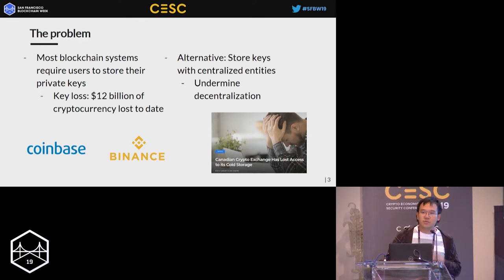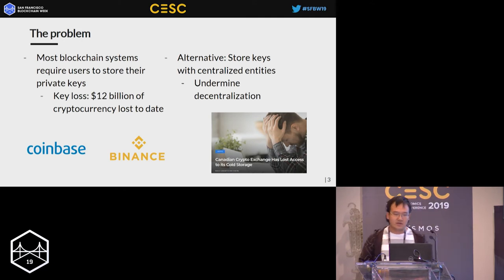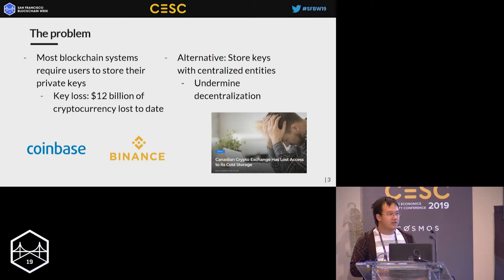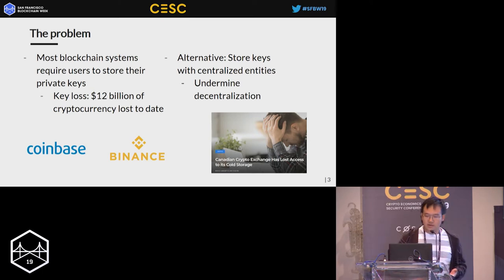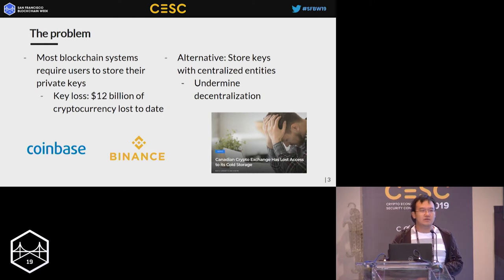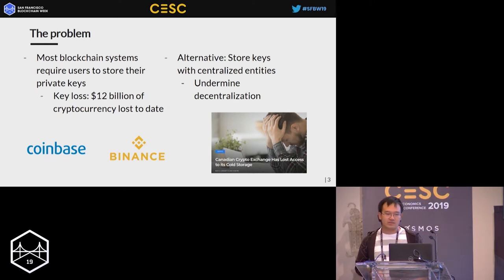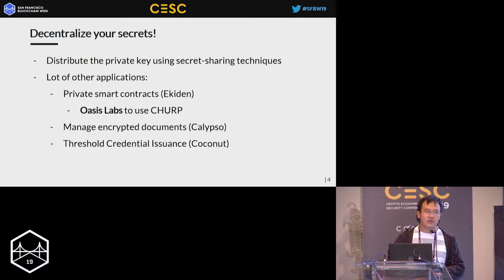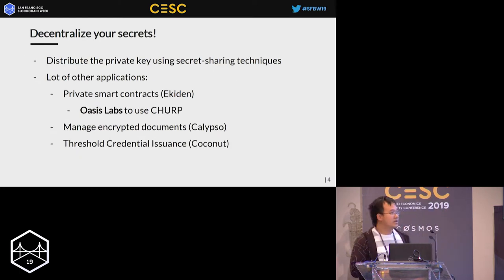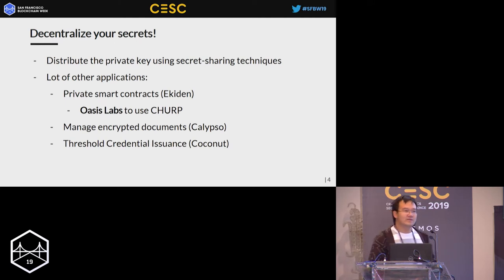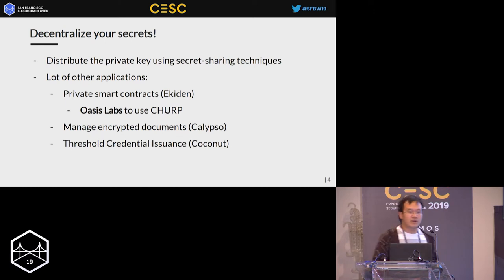Managing private keys is not easy — it is reported that $12 billion of cryptocurrency is lost because of lost keys. So people have turned to an alternative: storing their keys with centralized entities such as Coinbase. But this kind of centralization of keys undermines the very decentralized nature that defines blockchain systems. Our idea is: why not decentralize our keys like our resources? We propose to use a technique in cryptography called secret sharing.